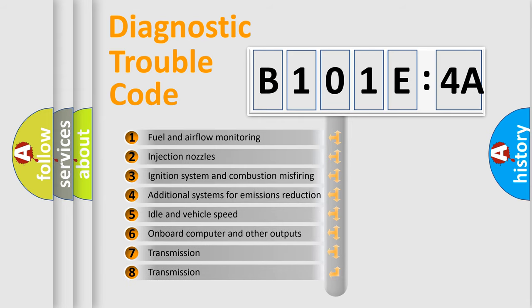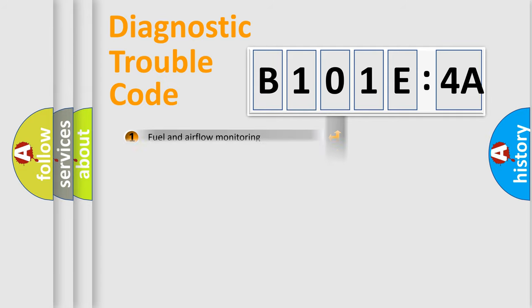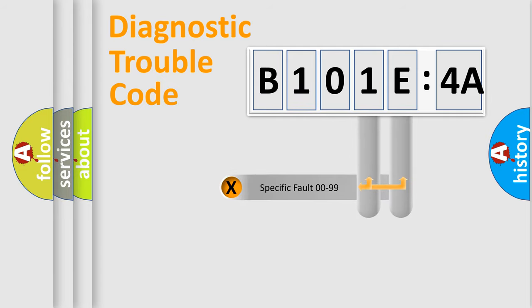The third character specifies a subset of errors. The distribution shown is valid only for the standardized DTC code. Only the last two characters define the specific fault of the group.